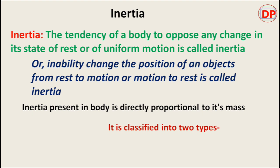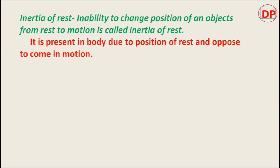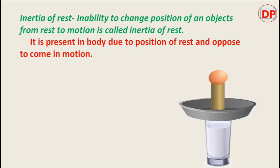Inertia is classified into two types. Inertia of rest: the inability to change the position of an object from rest to motion is called inertia of rest. It is present in a body due to its position of rest and opposes it from coming into motion.